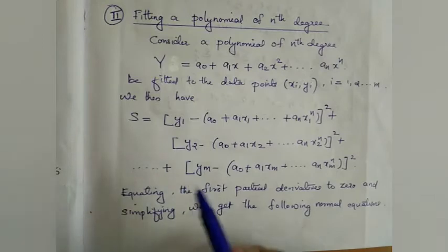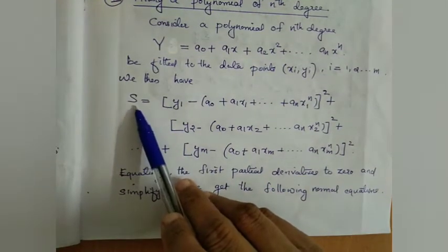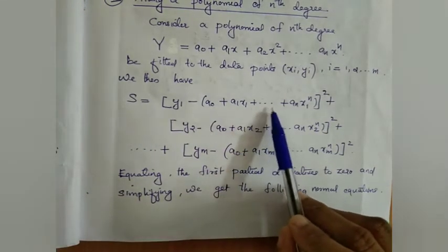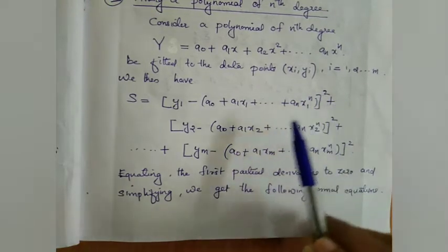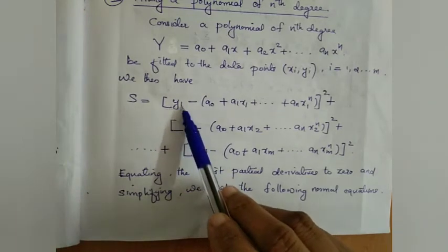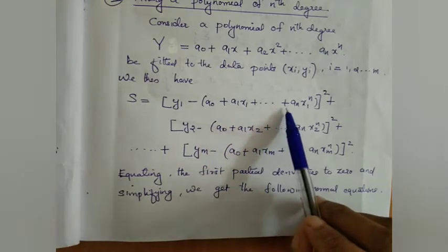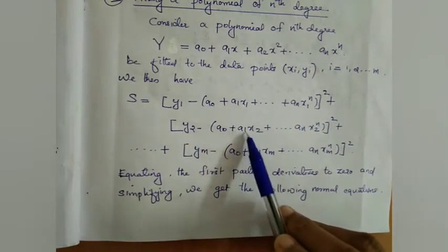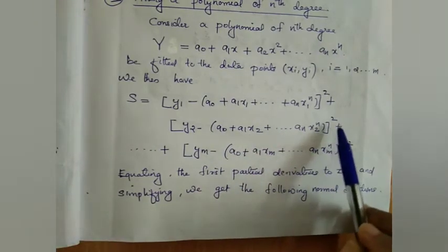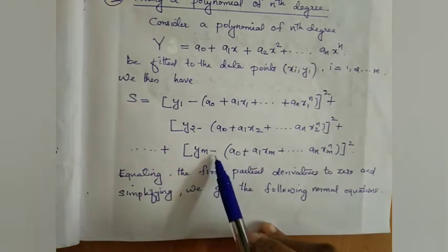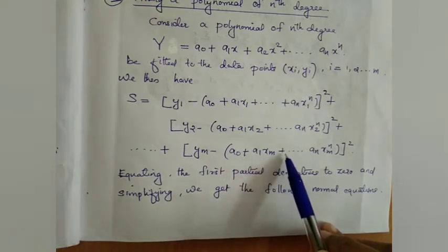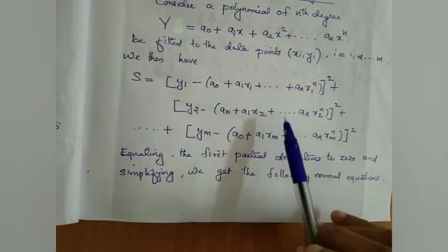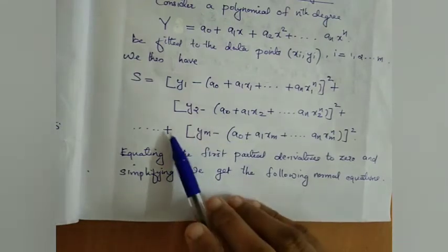By using the method of least squares, we have S equal to the sum of squares of errors. S equals the sum from i=1 to m of (yi minus (a0 plus a1xi plus ... plus an xi raised to n)) squared. That is, S equals e1 squared plus e2 squared plus ... up to em squared.